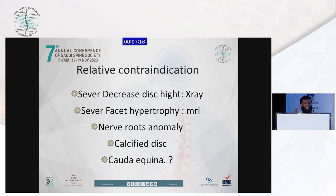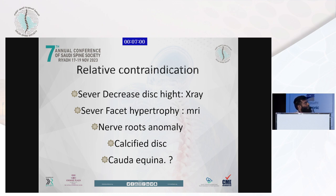There are relative contraindications. Severe decrease in disk height — the patient can undergo TLIF. Severe facet hypertrophy, nerve root anomaly, calcified disk, or cauda equina syndrome. For uniportal, I'm not doing it for cauda equina patients.